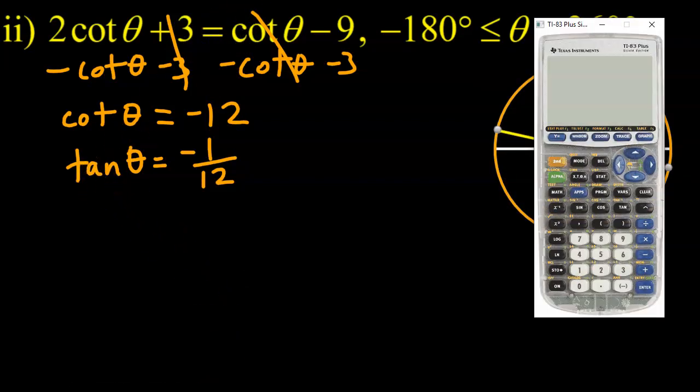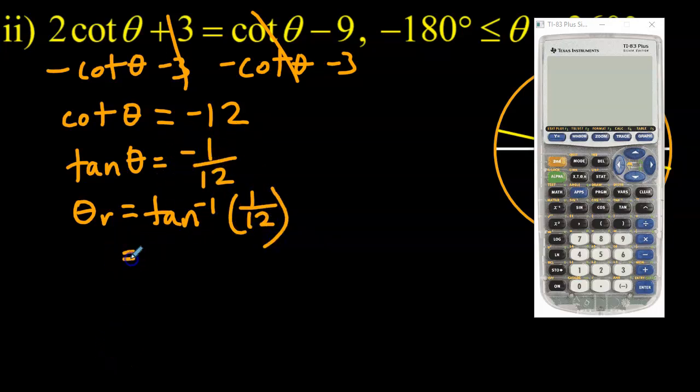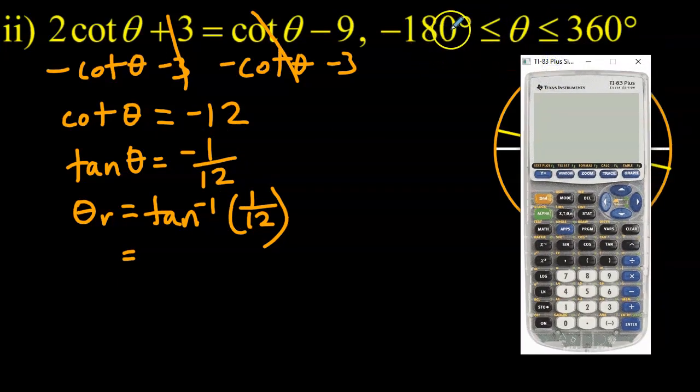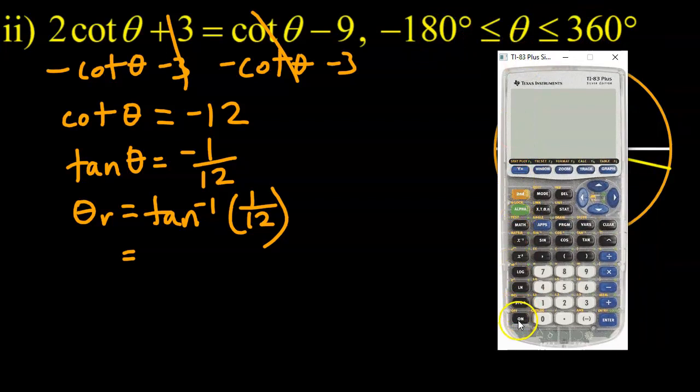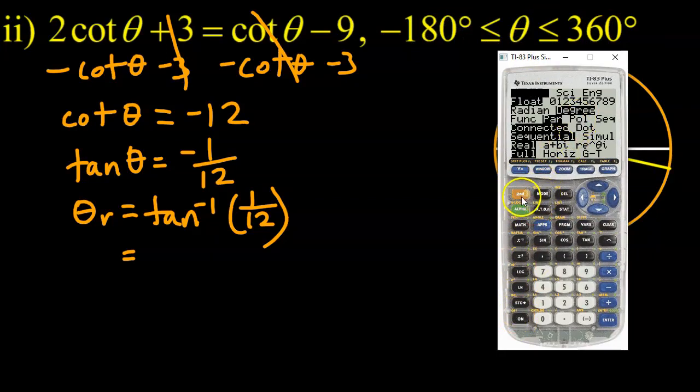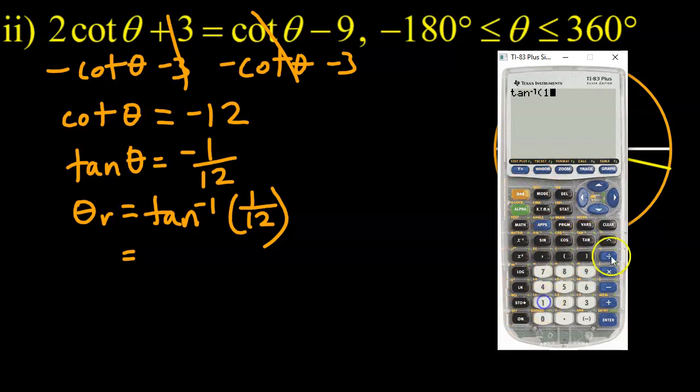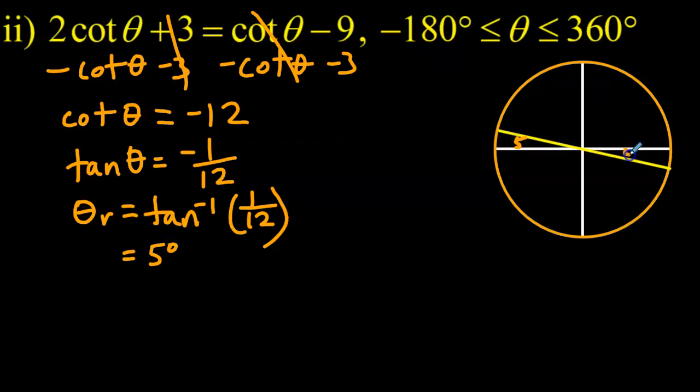So let's go to the calculator and see what the reference angle would be. So in this case, I will have θ, let's call it θ_r for reference angle, is equal to inverse tan of, you might remember this from a previous video, you take the inverse tan of the absolute value of the ratio. The mode that we should be in is degree mode as indicated in the domain. So I'm going to make sure that I'm in degree mode. Yes, I am. Inverse tan now of 1/12. And I get a reference angle of, we'll just say 5 degrees. 5 degrees approximately when all is said and done. So that's 5 degrees, that's 5 degrees.